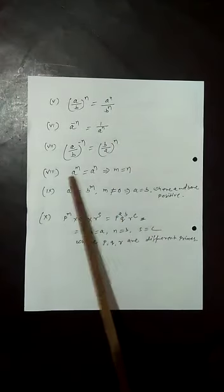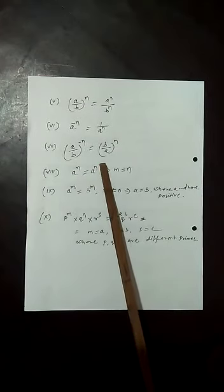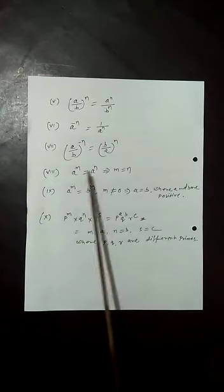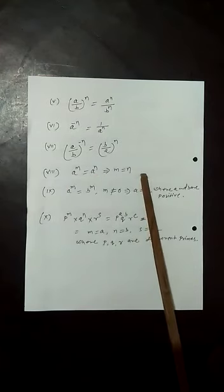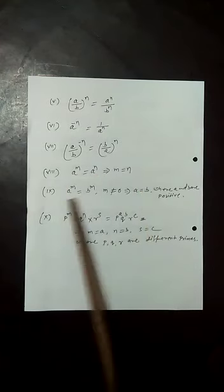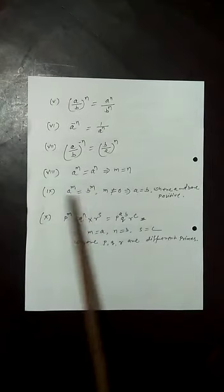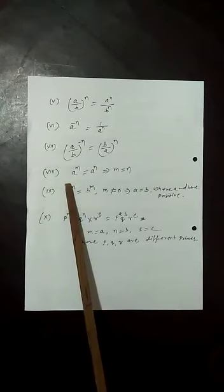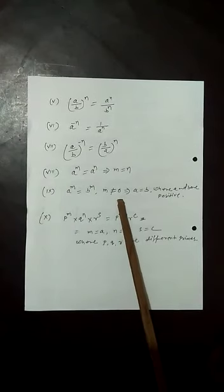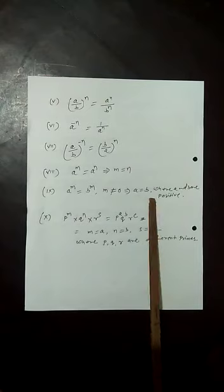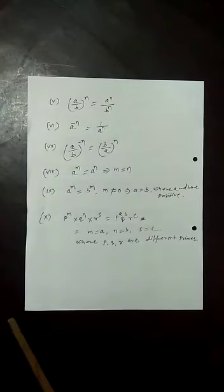If a to the power m equals a to the power n, and the base is the same on both sides, then the base is cancelled and m equals n. If a to the power m equals b to the power m, and the power is the same on both sides with m not equal to 0, then a equals b, when a and b are positive numbers.